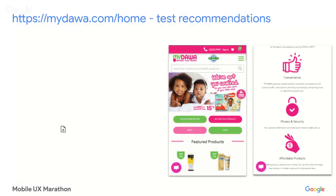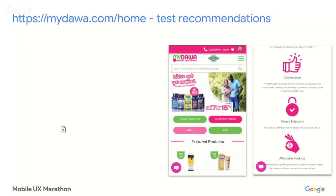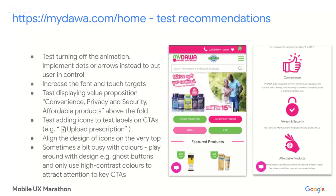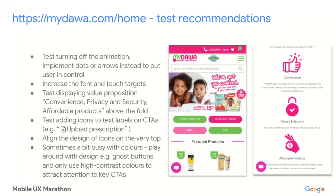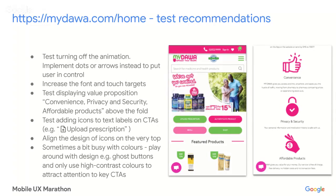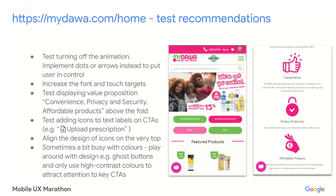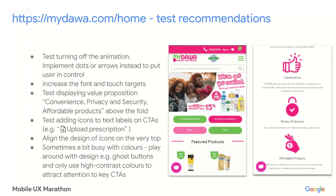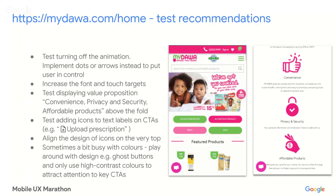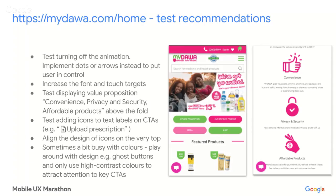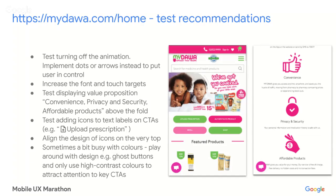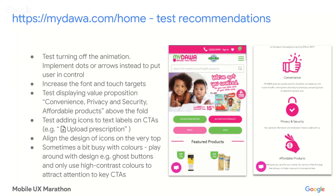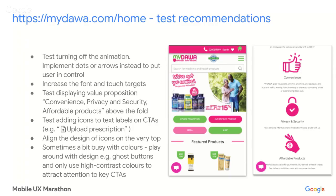Moving on to things you could test: there is an animated cursor on the home page, so definitely test turning off this animation. It attracts a lot of visual attention and it's hard to read the banners because they move pretty fast. Try putting users in control — allow them to explore the carousel themselves by implementing dots or small arrows to click or swipe through. Also consider increasing the font size and touch target, as it can be hard to read and tap some icons or navigation categories.